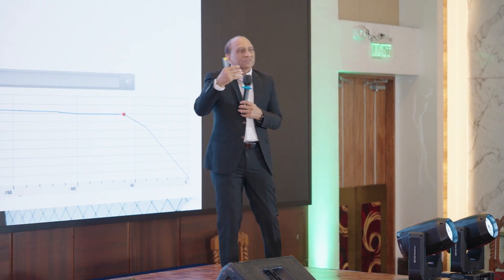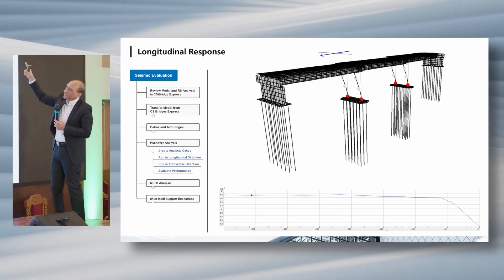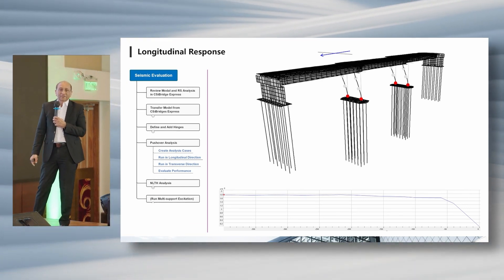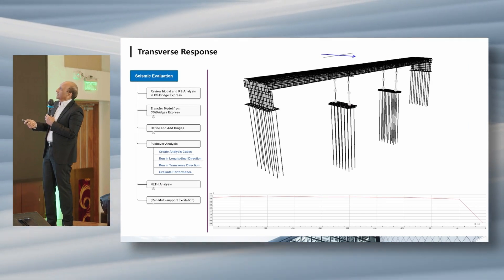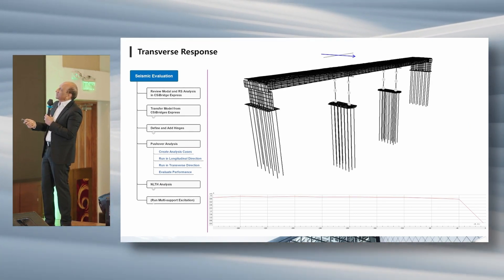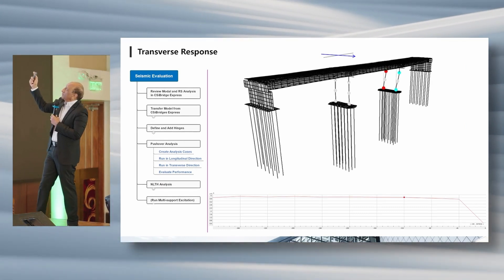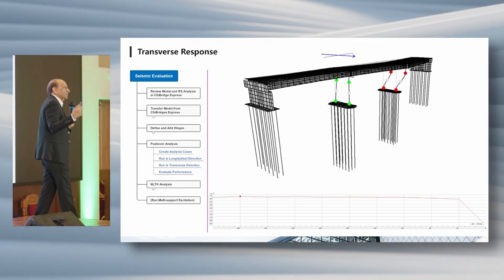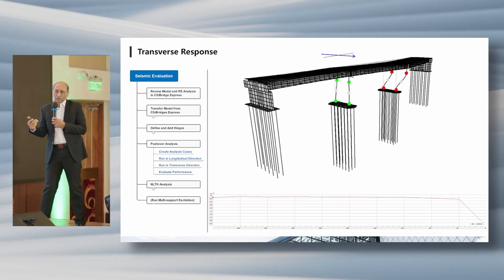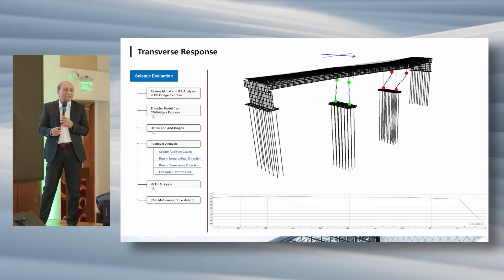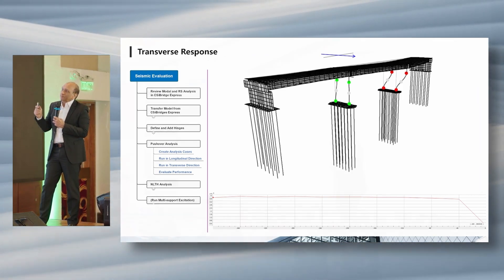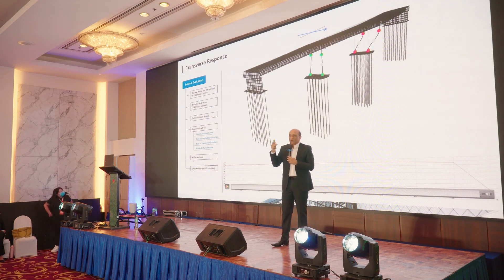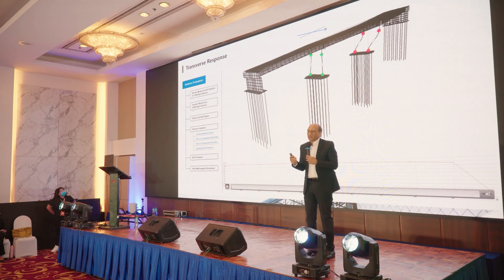We can see the hinges forming as we push the structure. In the transverse direction, hinges form as we push the bridge that way as well. We push the bridge once longitudinally and once in the transverse direction using the corresponding model response. You can get the hinge deformation and hinge state in the pushover curve as it runs. So the non-linear static pushover analysis and response spectrum analysis are now both done.